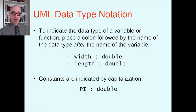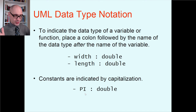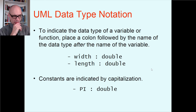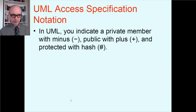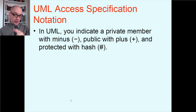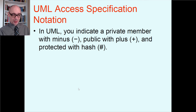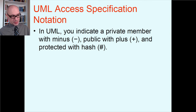For access specifiers — whether something is public, private, or protected — in UML you indicate private members with a minus sign as a prefix, public with a plus sign, and protected with a hash symbol. We haven't used protected yet — we'll see that in chapter 15 — but it's good to know about it now.